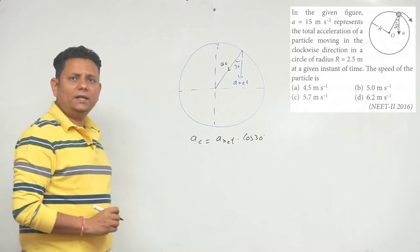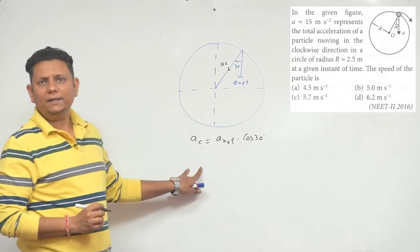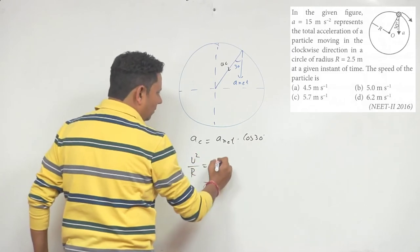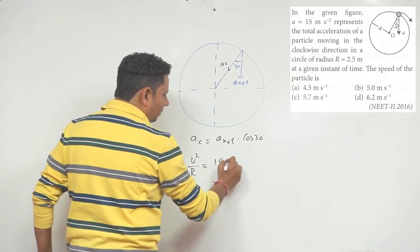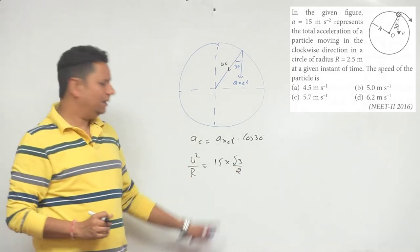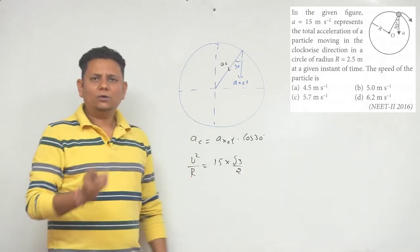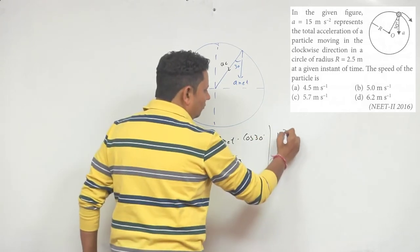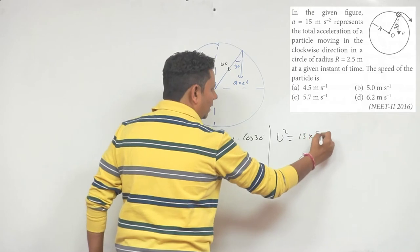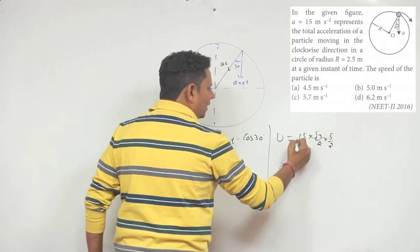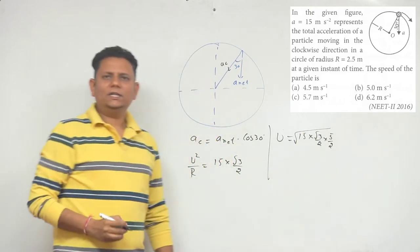We can write A_C, because we don't know velocity, as V square by R. So it will be V square by R equals A net times 15 multiplied by root 3 by 2, multiplied by 5 by 2. And if we take it under root, we will get velocity value.